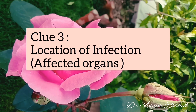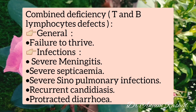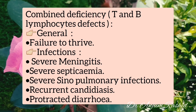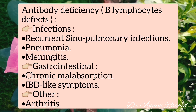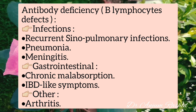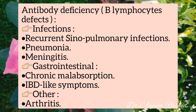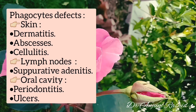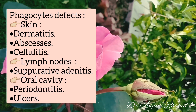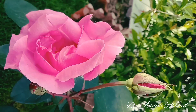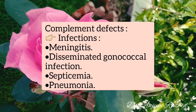The third clue is the location of infection or affected organs. In combined deficiency, there is failure to thrive and severe infections such as meningitis, septicemia, sinopulmonary infections, recurrent candidiasis, and protracted diarrhea. In antibody deficiency, recurrent sinopulmonary infections, pneumonia, and meningitis are common, along with chronic malabsorption, inflammatory bowel disease-like symptoms, and arthritis. In phagocytic defects, skin infections such as dermatitis, abscesses, and cellulitis are common, along with suppurative lymphadenitis and oral cavity infections such as periodontitis and ulcers. In complement defects, meningitis, disseminated gonococcal infections, septicemia, and pneumonia are common.